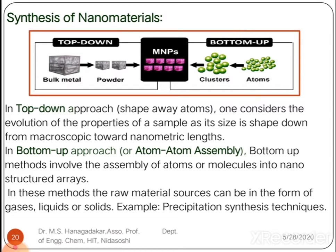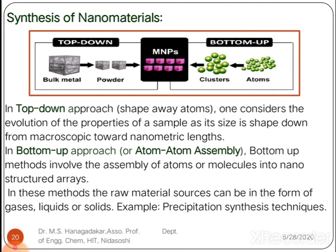For synthesis of nano metals, two methods are widely used: the top-down approach and the bottom-up approach. The top-down approach is also known as 'shaving away atoms' compared to bulk material, where properties evolve from macroscopic to nanometric length scale. The bottom-up approach involves atom-by-atom assembly, leading to an assembly of atoms or molecules that form final nanostructured arrays.